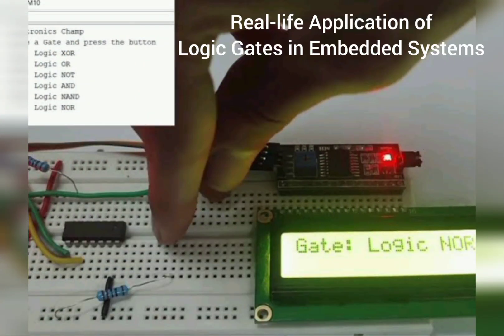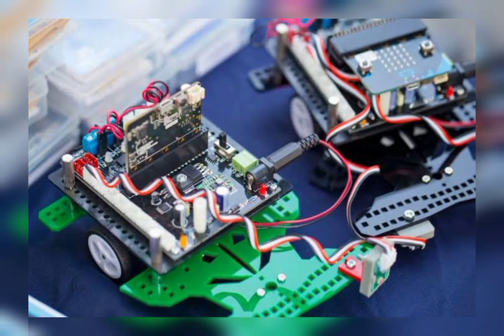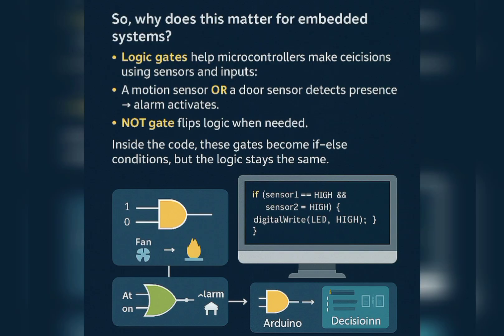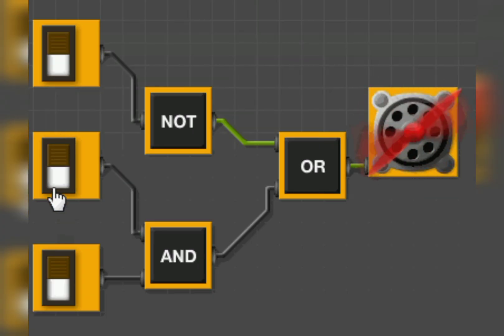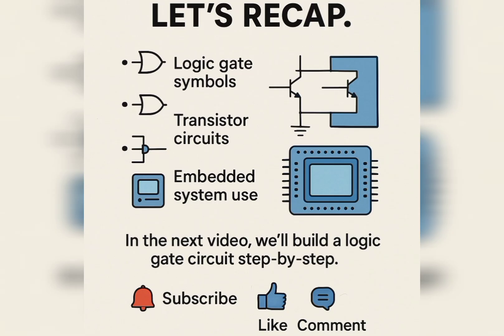What are the real-life applications of logic gates in embedded systems? Logic gates help microcontrollers make decisions using sensors and inputs. Think about an Arduino project: a temperature sensor reads high and a fan turns on; a motion sensor or door sensor detects presence and an alarm is activated. The NOT gate flips logic when needed. Inside code, these gates become if-else conditions — but the logic stays the same. We've learned how to build them using real components, such as transistors, and seen their application in powering decisions in embedded systems.